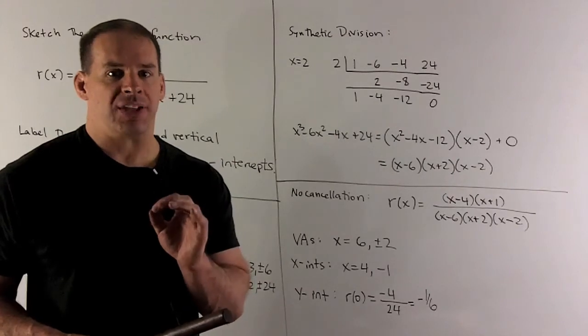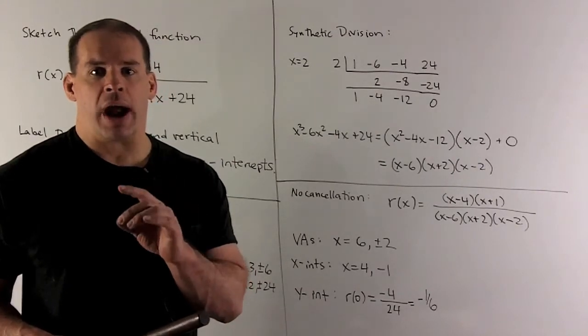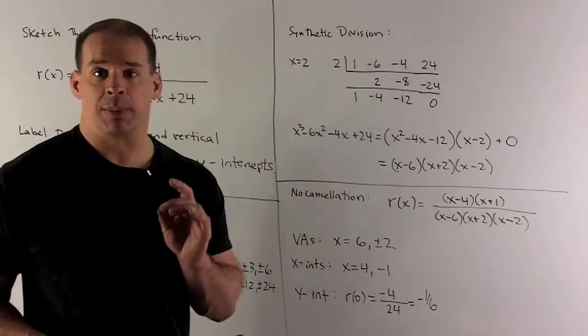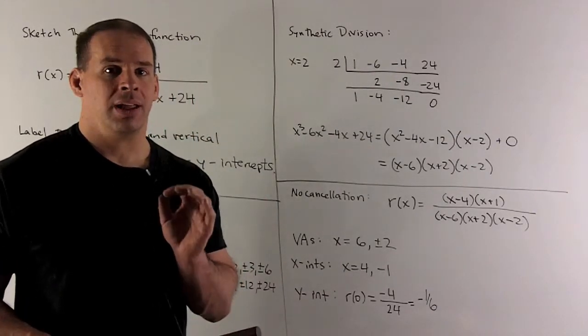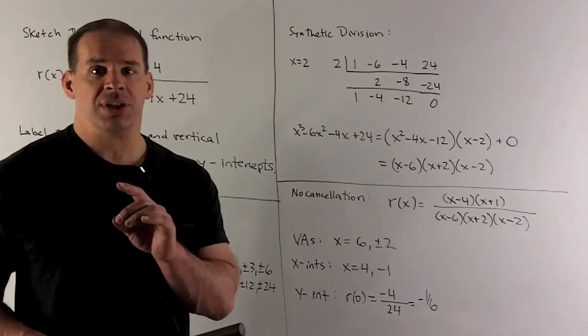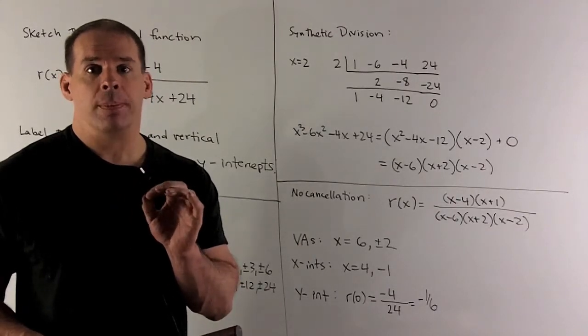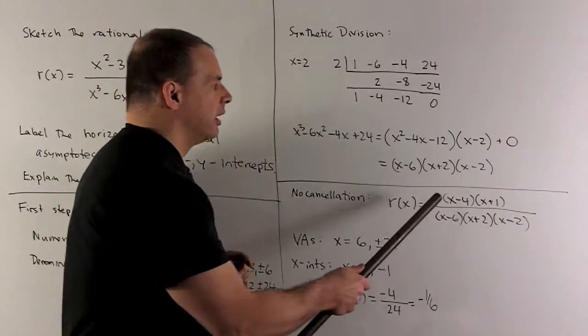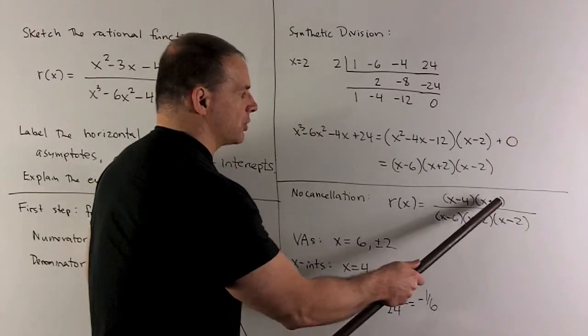First, the vertical asymptotes. They're going to occur where our denominator is zero. So a vertical asymptote is at x equals 6 or plus minus 2. Then the x-intercepts, that's where our function is equal to zero. That's going to happen where our numerator is zero. So we're going to get x equals 4 or x equals -1.